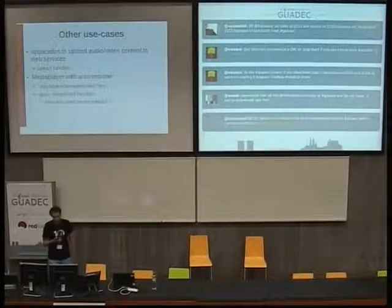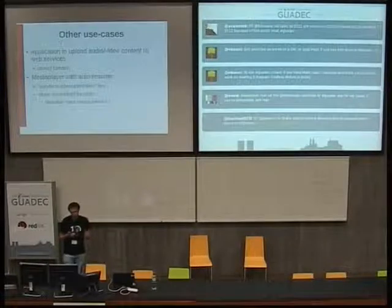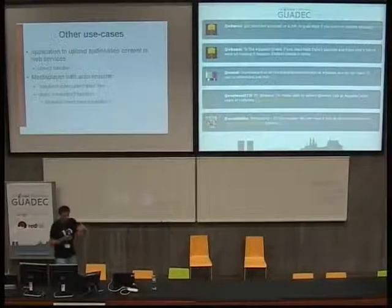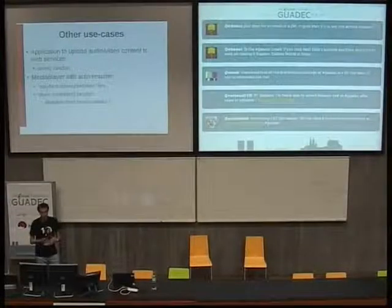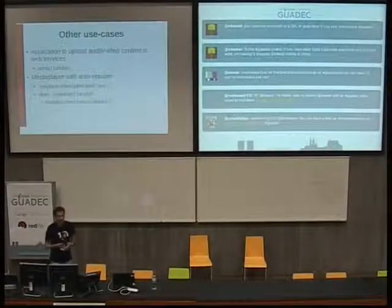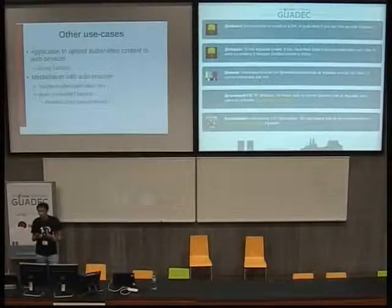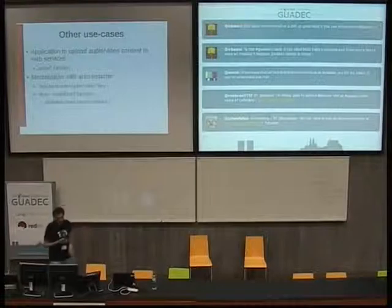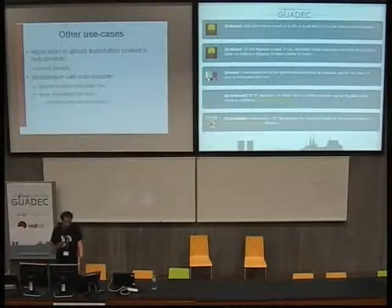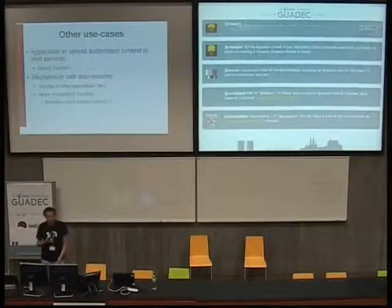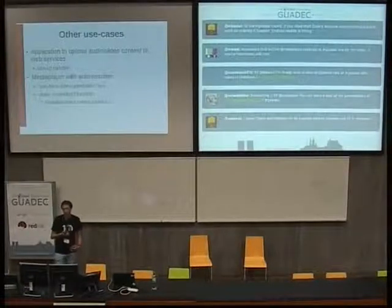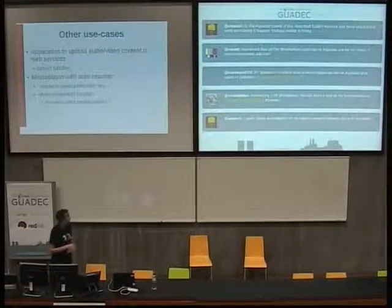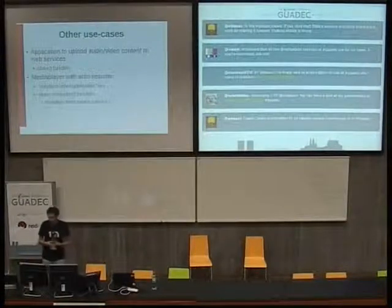To update the playback interrupt time, you change the value on the Grilo media object and use a function called store metadata to store that information. The way it works is: maybe playback interrupt time is not available from YouTube directly — it's stored locally via another plugin that provides this key. From the application's point of view, it's totally transparent. It updates a local database so that next time you recover the media, it has the new value.